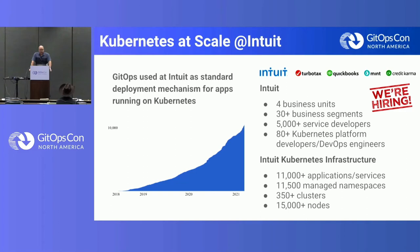Intuit is using Kubernetes at a pretty large scale. We have 350-plus clusters, and in fact, if you filed your taxes last year with TurboTax, you filed your taxes with Kubernetes. And for all those clusters, we're using GitOps as a standard mechanism to deploy apps to Kubernetes.